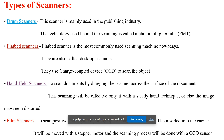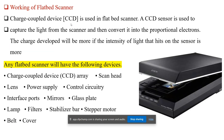Film scanners are used to scan positive and negative photographic images. The film is inserted into a carrier, moved with a stepper motor, and the scanning process is done with a CCD sensor. In olden days, film scanners were used to record pictures.